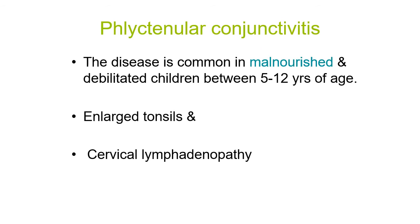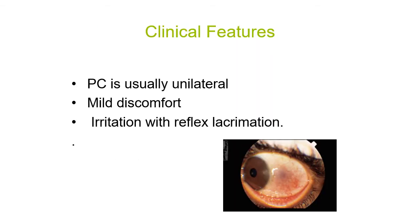The disease is common in malnourished and debilitated children between 5 to 12 years of age — some books say 4 to 14 years. These children typically have enlarged tonsils and cervical lymphadenopathy. Phlyctenulosis is usually unilateral. There is mild discomfort and irritation with reflex lacrimation.